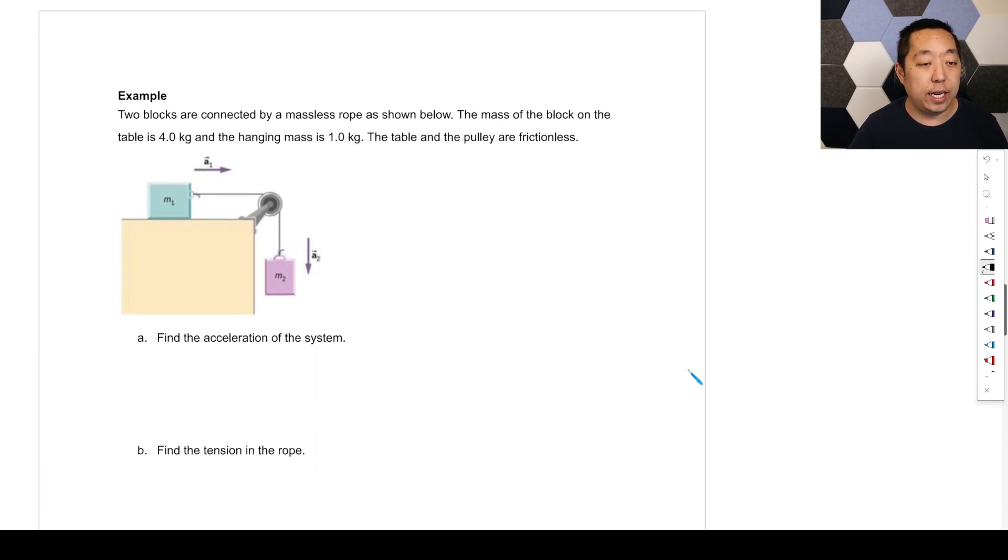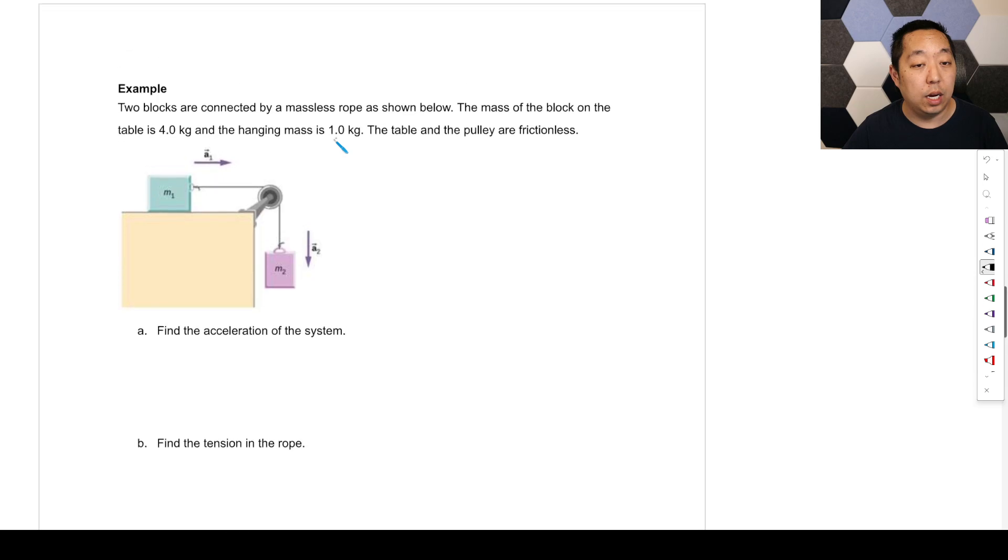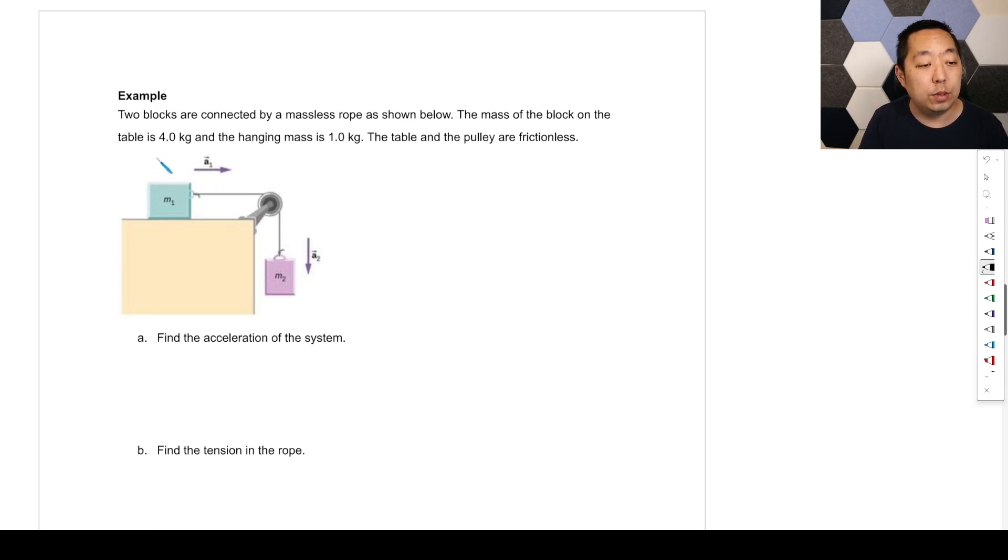Let's look at another one. Two blocks are connected by a massless rope as shown below. The mass of the block on the table is four kilograms. Hanging mass is one kilogram. So this is M2 is one kilogram. M1 is four kilograms. Find the acceleration of the system. So we have the acceleration. Now notice in this figure, they gave you two different accelerations. But again, we assume that the rope's not stretchable. They're the same acceleration. And that makes sense. This block M2 is going to fall. M1 is going to move to the right. So same magnitudes, but different directions. Because one's pointing down and one's pointing to the right. So obviously not pointing in the same direction, but same magnitude.